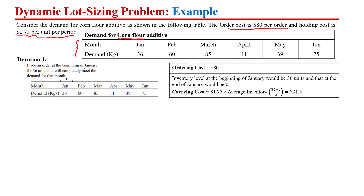Regarding the first iteration — we are going to develop the dynamic lot sizing for a six time period planning horizon. One by one, we are considering a planning horizon of one month for every iteration. So in iteration one, the planning horizon is the month of January.